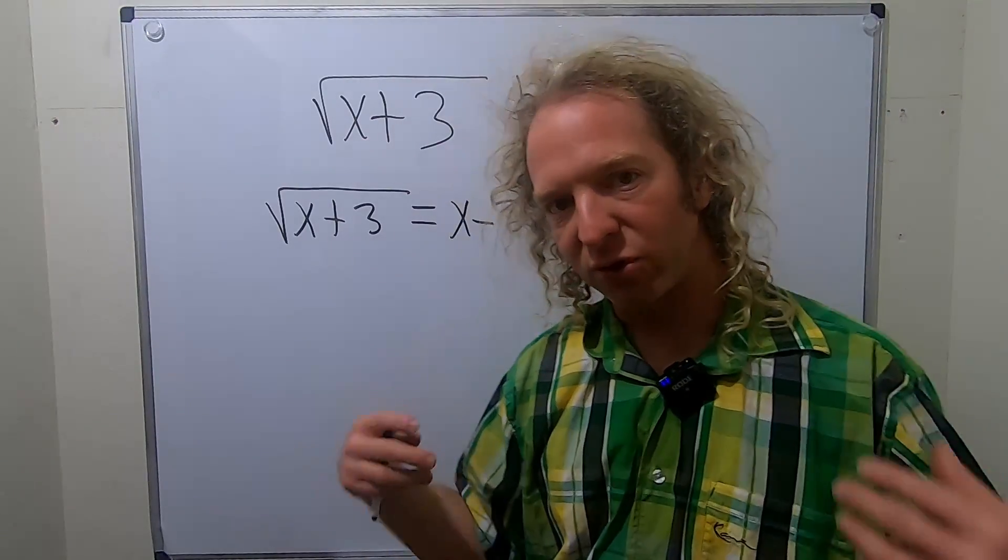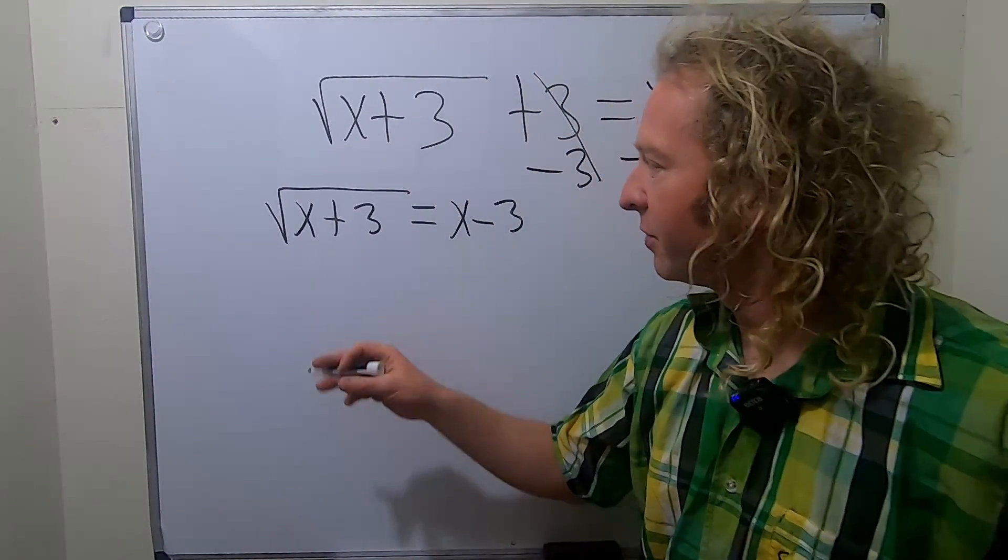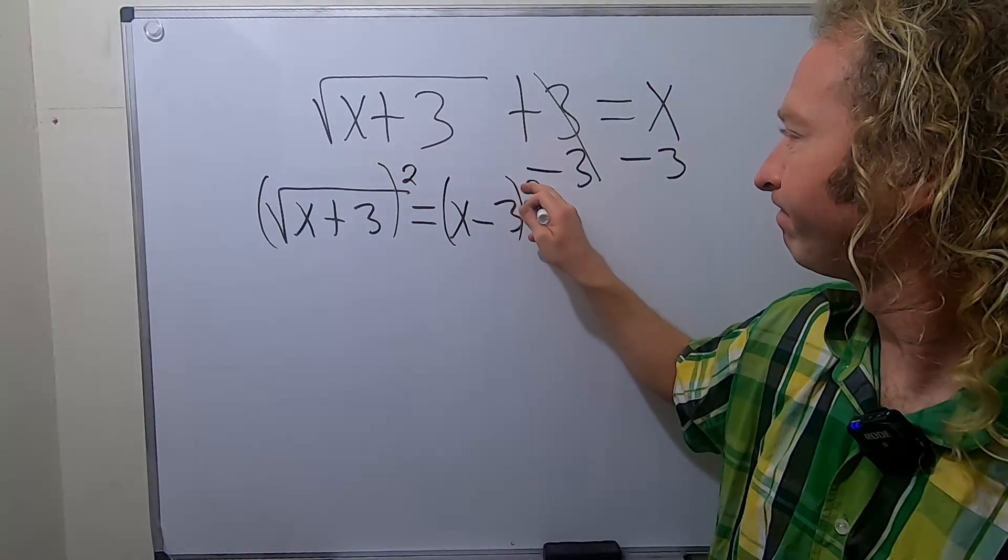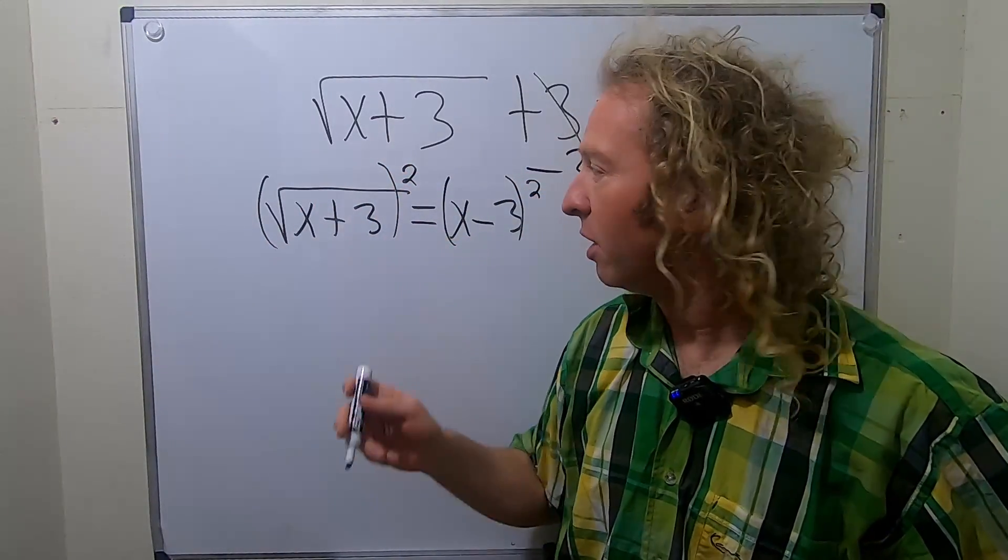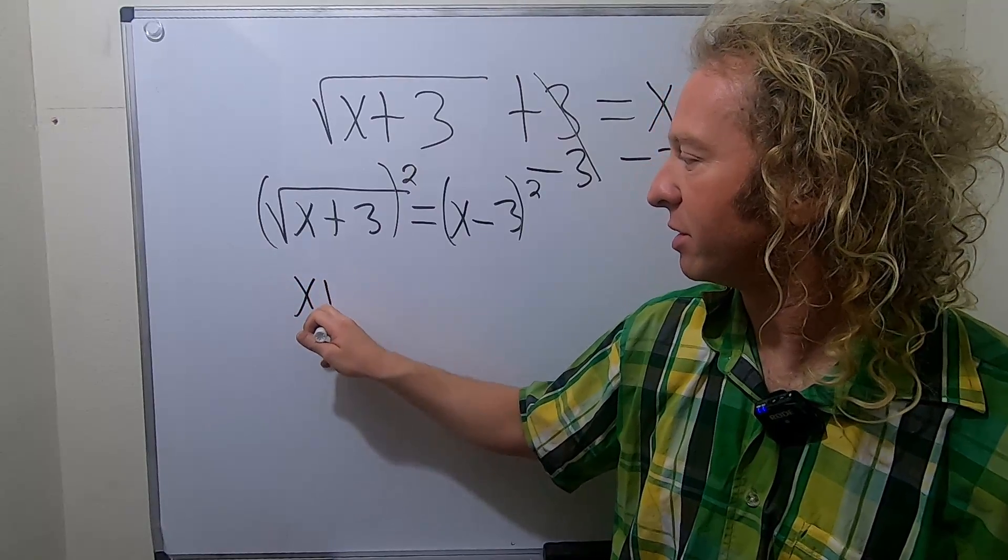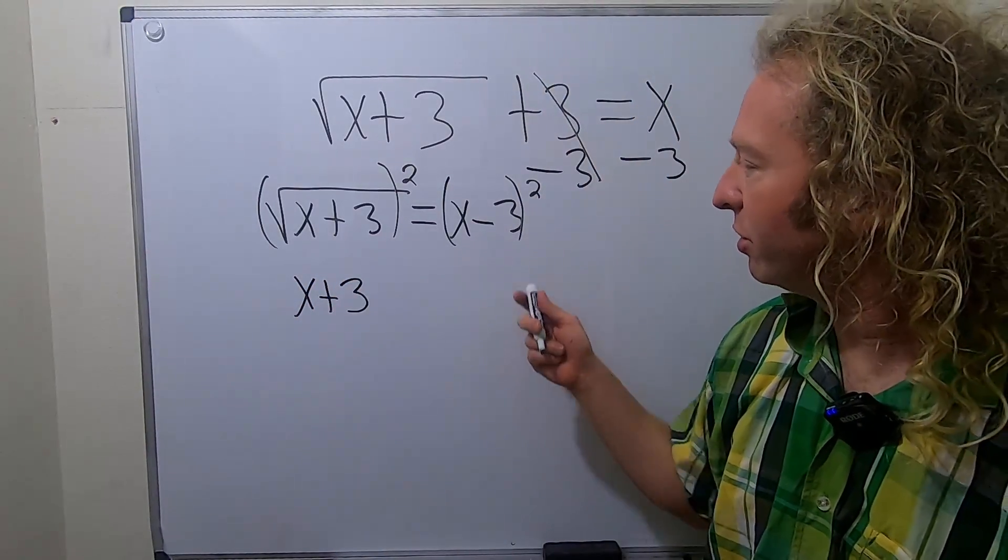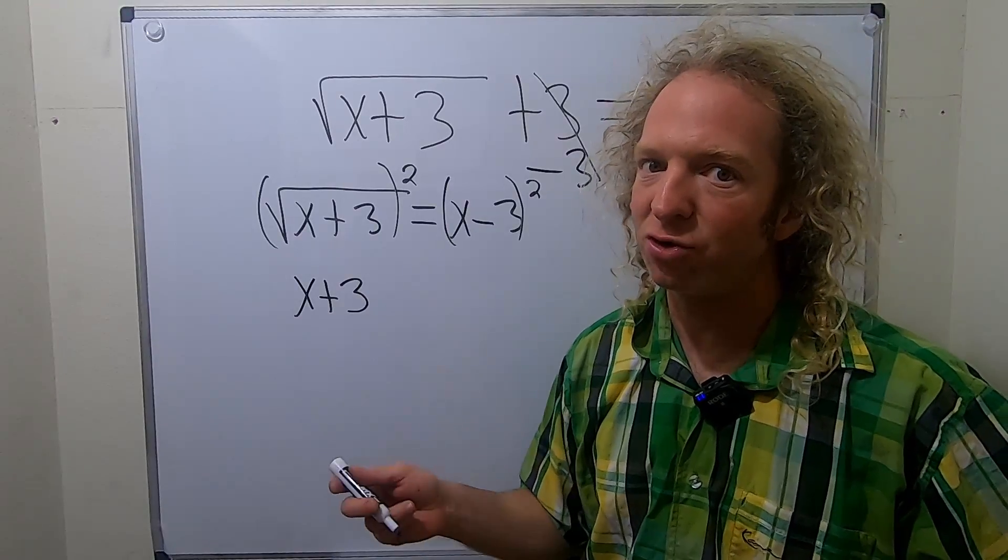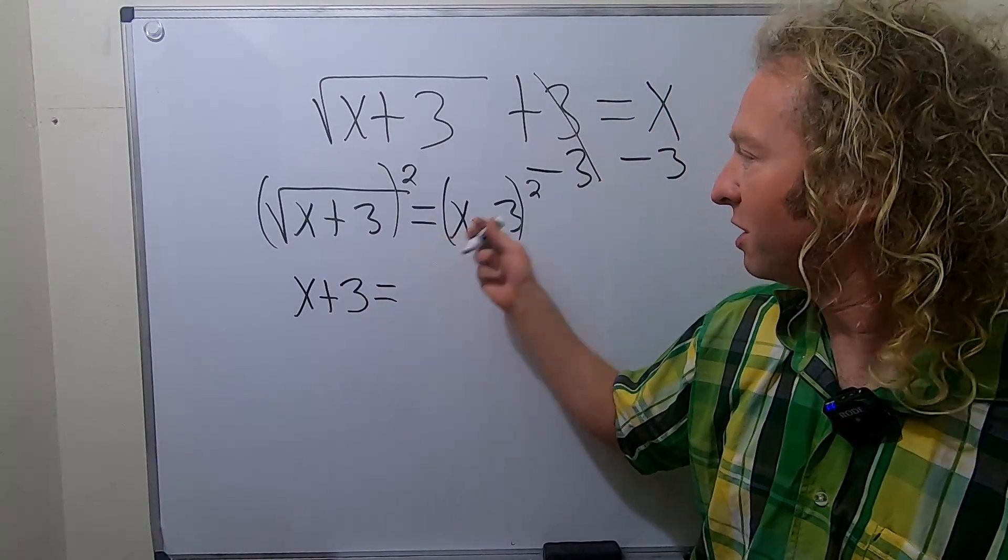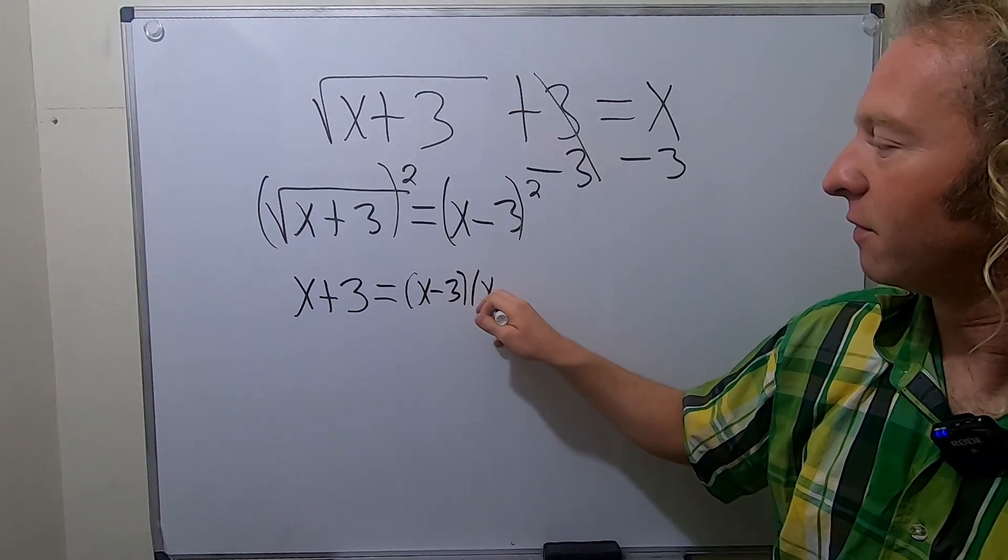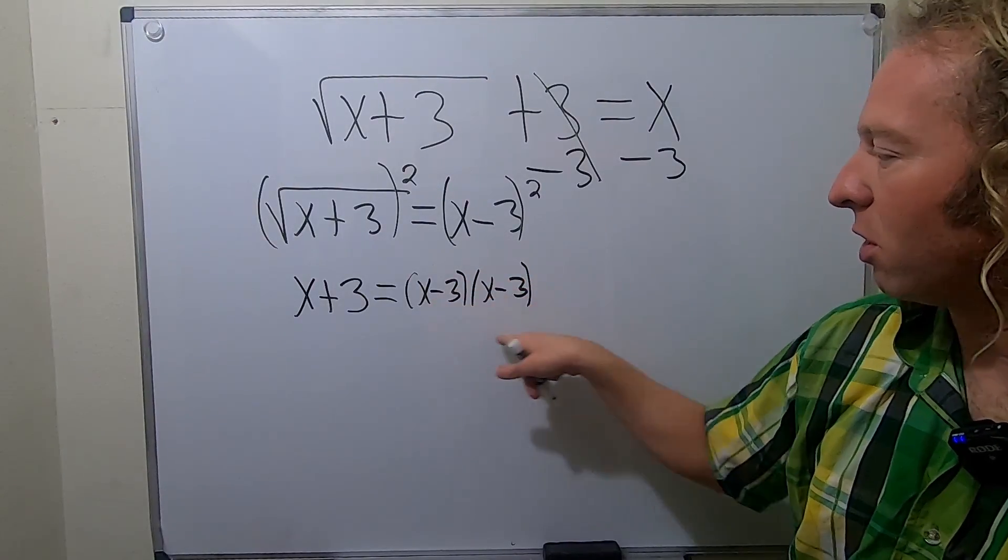Once you've done that, to get rid of the square root, all you have to do is square both sides. We're going to square this side and square this side. Squaring this will give us x plus 3 - the square root goes away. There's a formula for this, or you can write it twice and distribute. I'll write it twice - whenever there's a 2, you can just write it twice, and then we'll multiply it out.